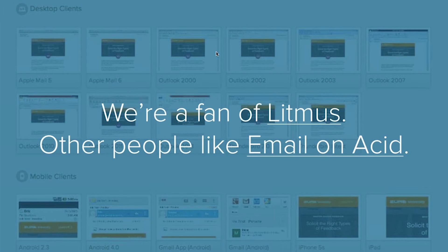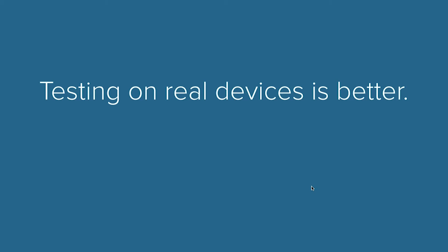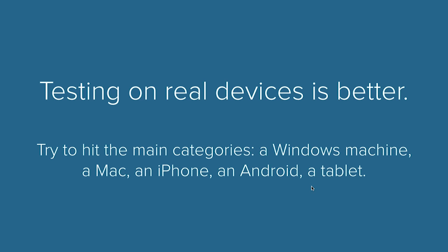You get a page that looks something like this. It's a great way to visually validate that your email looks good on all of these different email clients. They have desktop clients, mobile clients — Litmus probably supports dozens if not hundreds of email clients. You can pick which email clients you want and they'll show them.